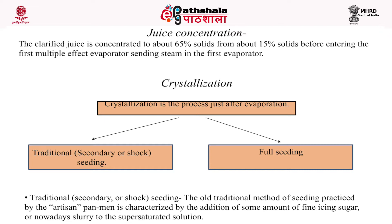Crystallization is the process just after evaporation. The clarified sugarcane juice is boiled in an evaporator to remove most of the water, leaving a thick syrup. In crystallization, the syrup is boiled at low temperature under partial vacuum, and some seedings are added which cause the development and growth of sugar crystals. The outcome is called massecuite.